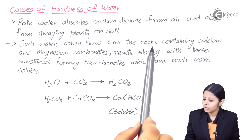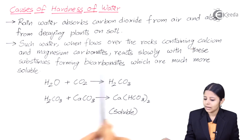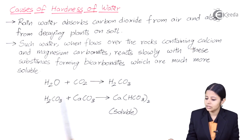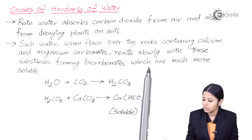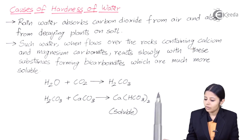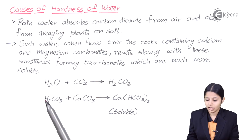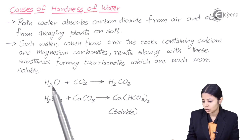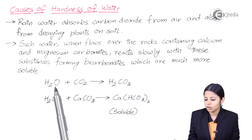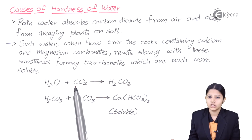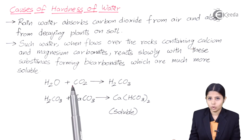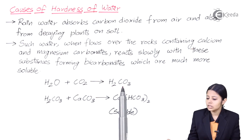Such water, when it flows over rocks containing calcium and magnesium carbonates, reacts slowly with these substances to form bicarbonates, which are much more soluble. Let us have a look at this reaction. We have H2O plus CO2 — H2O is water and CO2 is carbon dioxide gas. When H2O mixes with CO2, it forms H2CO3.